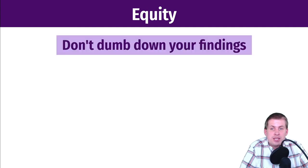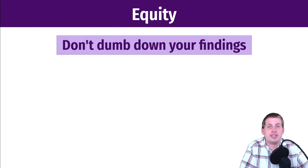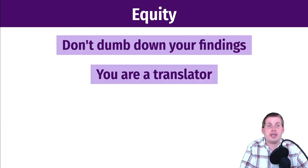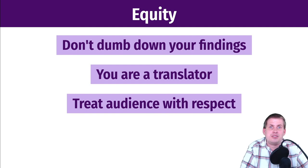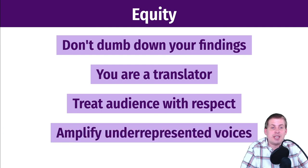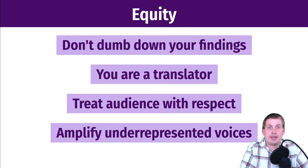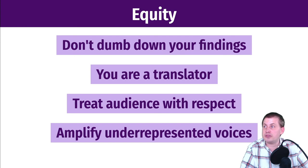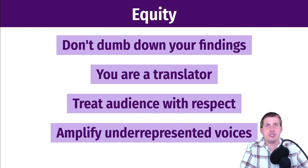The main takeaways from this equity section: don't dumb down your findings — that language shows no respect for your audience and treats them as stupid. You're translating your findings. Treat your audience with respect as you fit your findings to their needs — again, you're translating, not dumbing down. Finally, amplify underrepresented voices: it helps with audience needs, the quality of your research, and the quality of your storytelling. If you can avoid the pitfalls of inequitable storytelling, avoiding manipulation, and making sure you're telling good stories without misinterpreted conclusions, you'll be able to give convincing reports and persuade people of your findings.